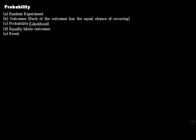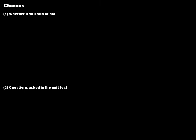In this video tutorial we'll talk about probability. Before discussing this topic, let's quickly talk about chances because chances and probability are connected to each other. To understand this, we take two examples. The first example is whether it will rain or not. It's a rainy season and you do not know whether it's going to rain today or not.